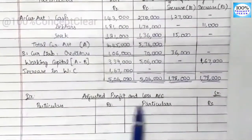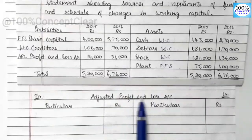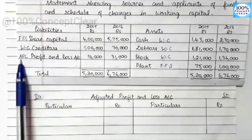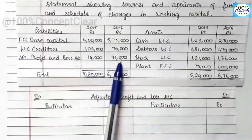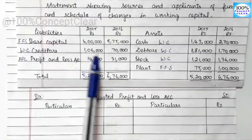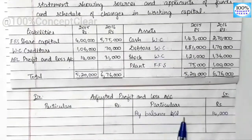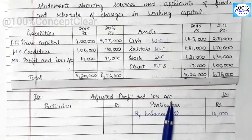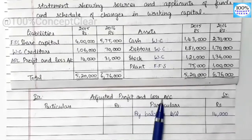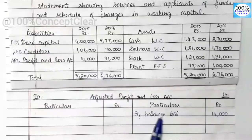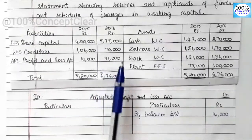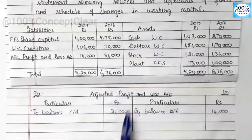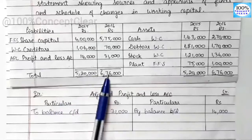Next, we open the adjusted profit and loss account. We go to the adjusted P&L account from the balance sheet. For 2015 and 2016, we note the opening balance. By balance brought down, the opening balance is 14,000 — we note this on the credit side. The closing balance is 31,000, noted on the debit side as balance carried down.